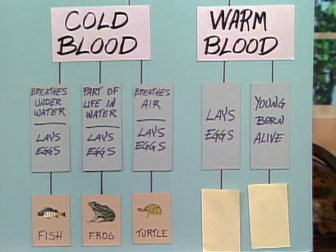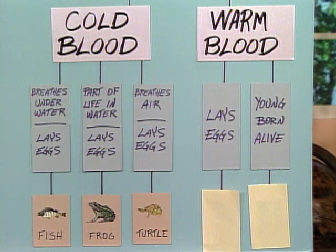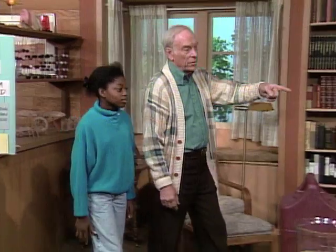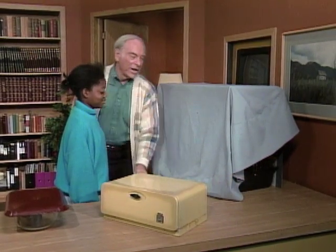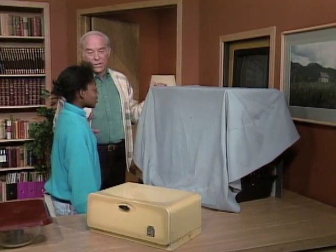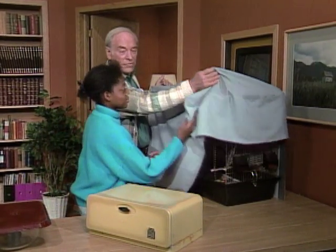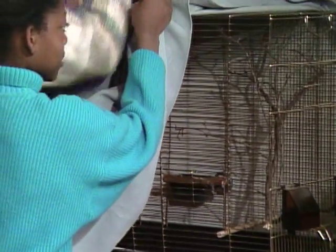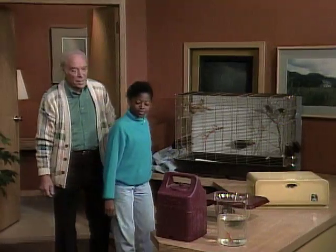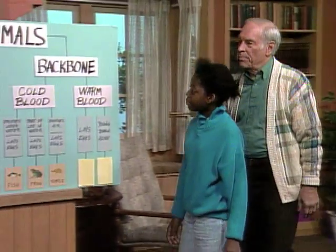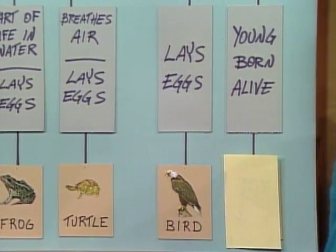Next: backbone, warm blood, and lays eggs. Well, this is the first time we're in the warm-blooded column. Could be pretty big. Dinosaur? No, not that. I'll give you another clue — feathers. Oh, birds! The only animal that has feathers is the bird. They're pretty. Two of them, as a matter of fact. What kind are they? They're Peking robins. Neat. So: backbone, warm blood, and lays eggs — it's a bird. Correct.